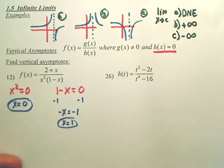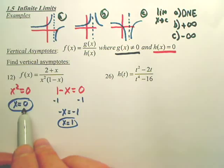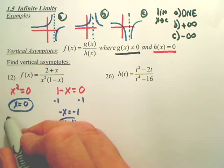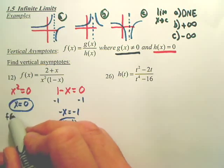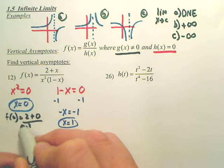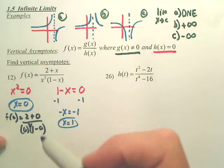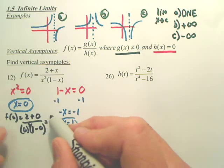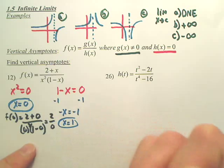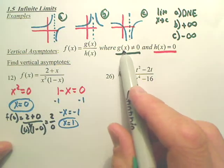But the second stipulation is that g of x cannot equal zero. So, when I plug in zero to this function, f of zero is going to be two plus zero over zero squared times one minus zero. Can you see how I plug zero into the function? That gives me two over zero, correct?